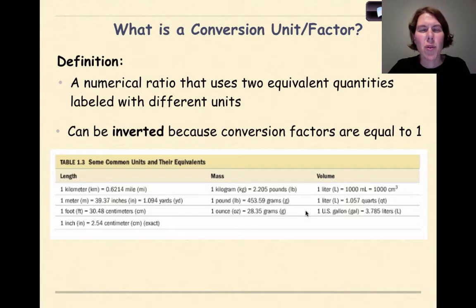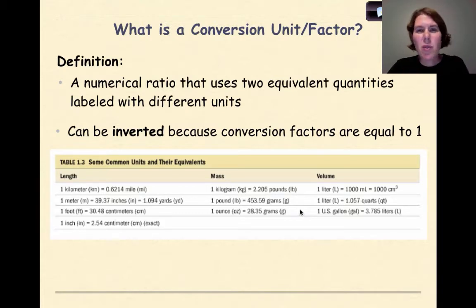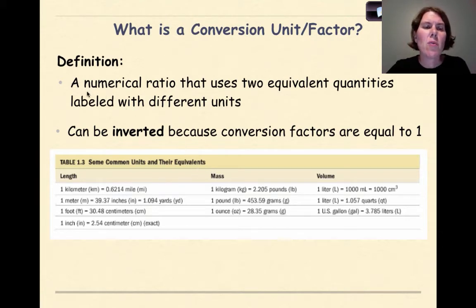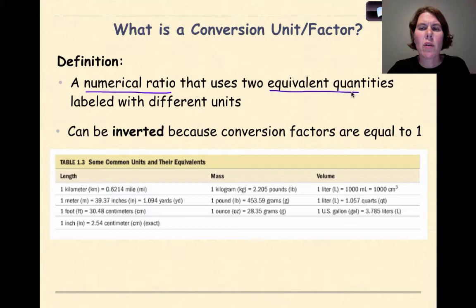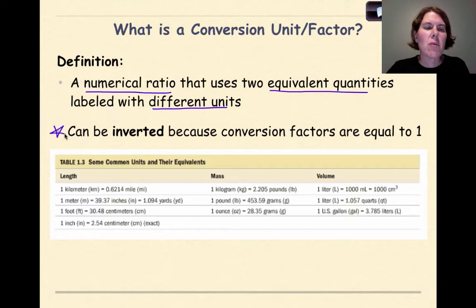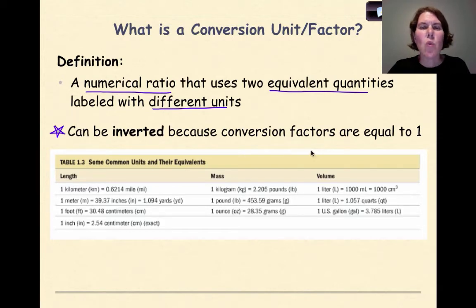The next thing to understand is what is a conversion unit or a conversion factor — these are really, really important. If you flip through your chemistry textbook, you'll find that they give you a bunch of examples of different conversion units. The definition is a numerical ratio that uses two equivalent quantities labeled with different units. These can be inverted — and that's an important statement — because conversion factors are equal to one.